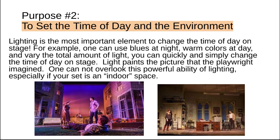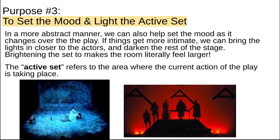Purpose three is to set the mood and light the active set. In a more abstract manner, we can also help set the mood as it changes over the play. If things get more intimate, we can bring the lights in closer to the actors and darken the rest of the stage. Lightening the set makes the room literally feel larger. The active set refers to the area where the current action of the play is taking place.